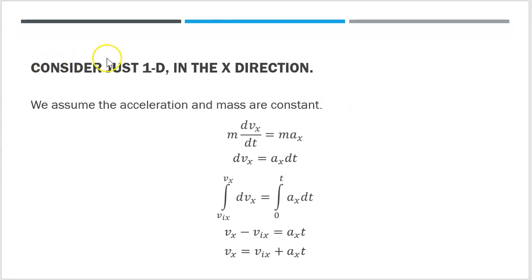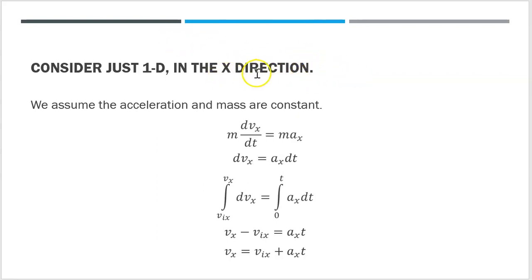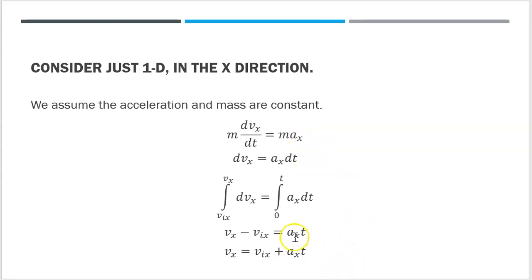Let's just look at one dimension. We're going to assume that everything's in the x direction to derive these kinematics equations, but remember that I could do this in any given direction — it's completely general. Since all the directions are independent of one another, you'd end up with the same equations, just with y or z components instead of x. So bear in mind that I'm doing it here in 1D, but you can really think about this as a vector form.